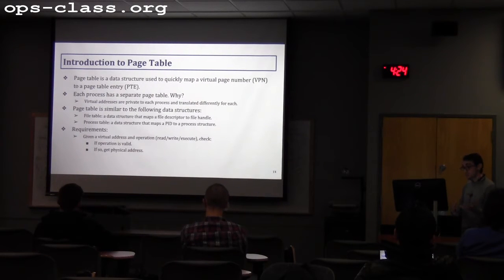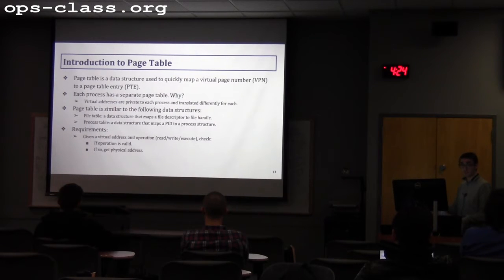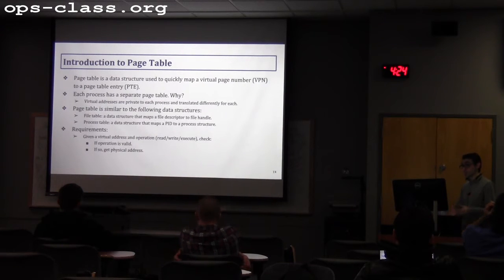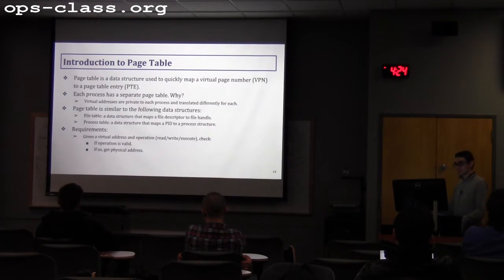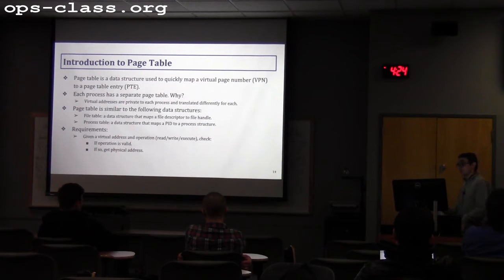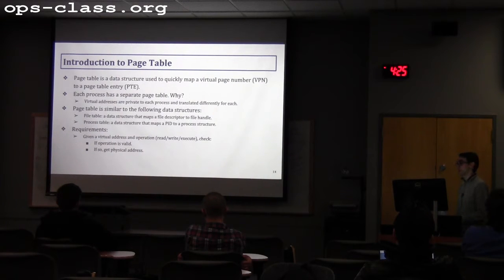Page table is comparable to the file table, which maps file descriptor to file handle, and the process table, which maps PID to process structure. The page table maps virtual page number to page table entry. The requirement for a page table: when given an address and an operation, it should tell you whether the address is valid, whether the operation on this address is valid, and if valid, retrieve the physical address for that virtual address.